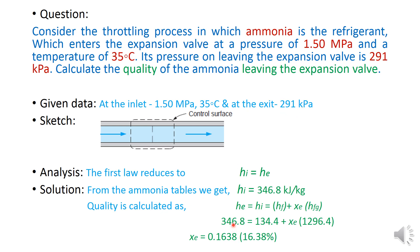We already know HI which is equal to HE, that is 346.8. Now HF is 134.4, the enthalpy at 291 kPa. HFG is 1296.4 at 291 kPa. After substituting we can get the value of quality or dryness fraction as 0.1638, which is 16.38%.